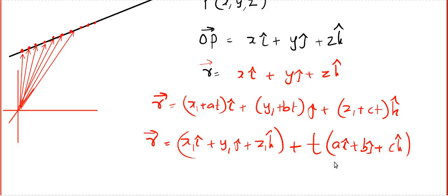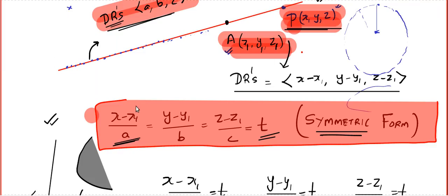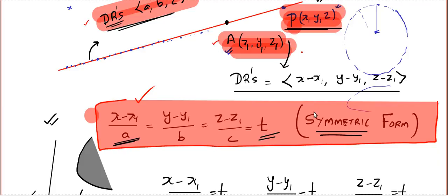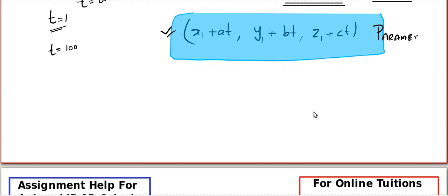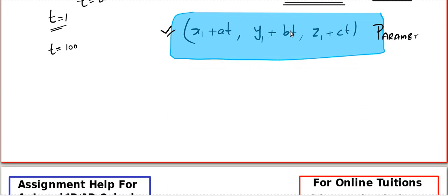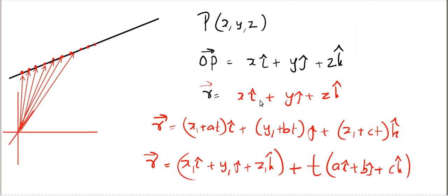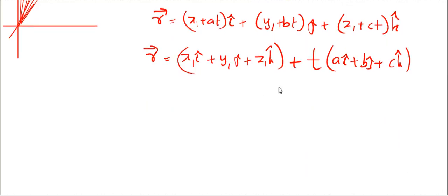That is the theory for straight lines. To write the equation of a line, you need one fixed point and the direction ratios. The first form is the symmetric form, the second is the parametric form, and the third is the vector form.